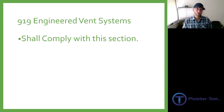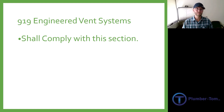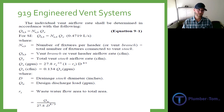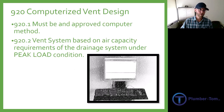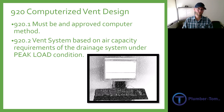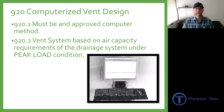Section 919 of the code gives information about engineered vent systems, stating that anything engineered outside of the standard provisions would have to comply with those sections. There is also a table with minimum requirements. Section 920 discusses computerized vent design — there may be other venting possibilities, but any such design would have to be approved and meet peak load calculations.